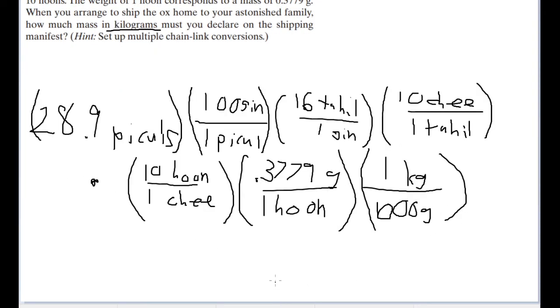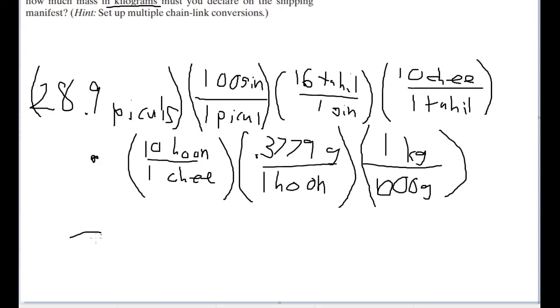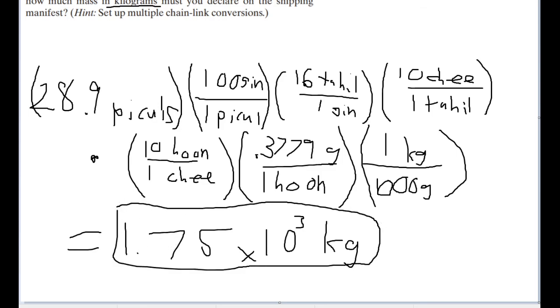Now putting all this into your calculator, or whatever your preferred method of doing these conversions is, you get an answer of about 1.75 times 10 to the third power kilograms. And that is our answer to this fairly straightforward problem.